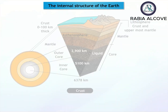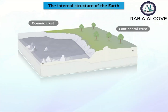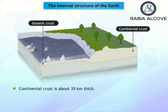The Earth's crust is divided into two parts: the continental crust and the oceanic crust. The crust under the land is called the continental crust, and the crust under the oceans is called the oceanic crust. The crust is made up of rocks like granite and basalt. The continental crust is about 35 kilometers thick, and the oceanic crust is about 8 to 10 kilometers thick.